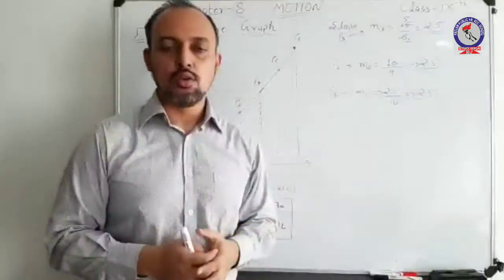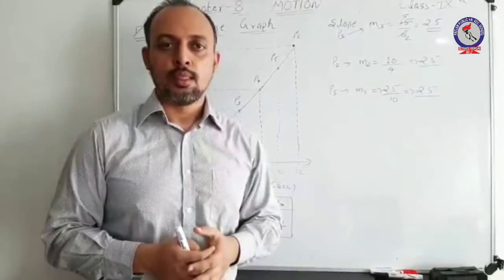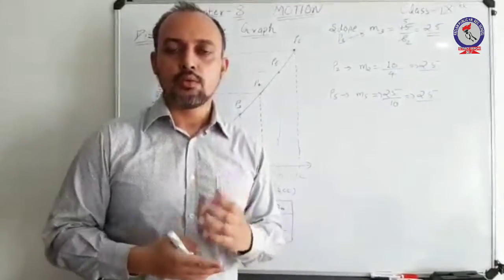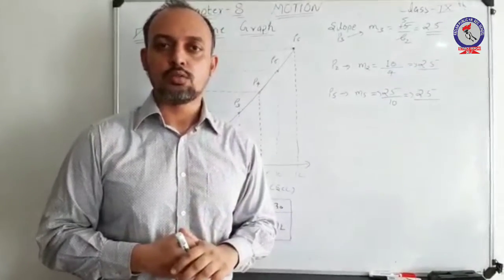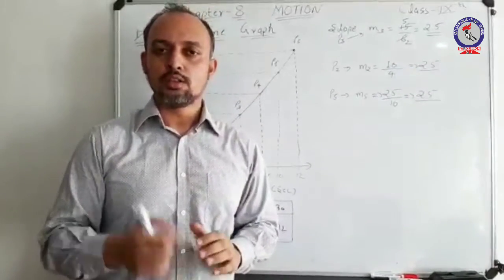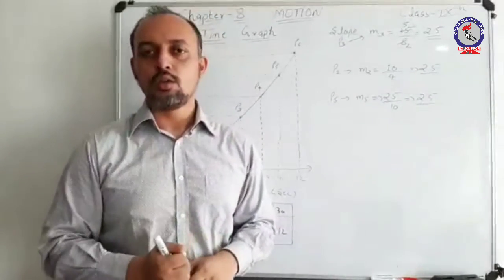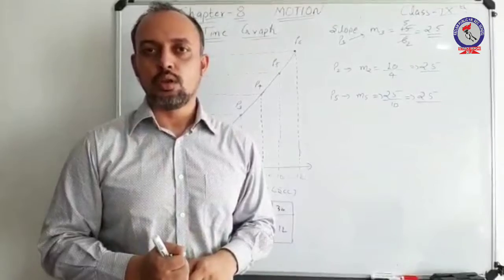Hence, you can conclude that this represents a uniform motion, because the slope at different points is the same. There is another way by which we can calculate the slope — by taking any two consecutive values.